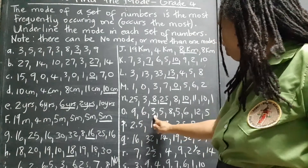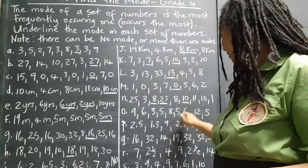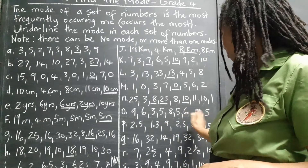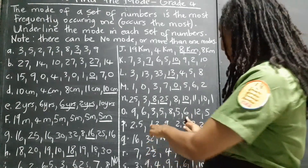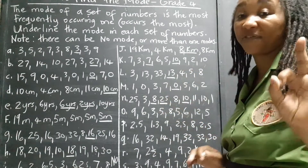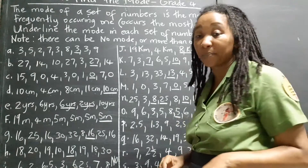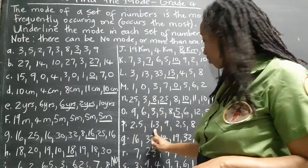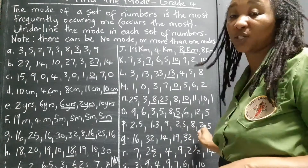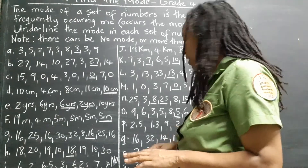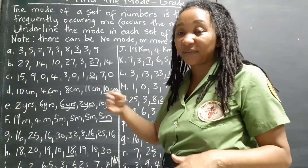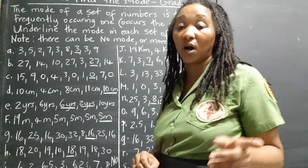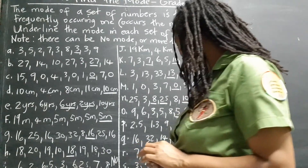Set O: 9, 6, 3, 5, 8, 5, 6, 12, 5. Five looks like the clear winner — there are three fives, and there are only two sixes. So yes, five is the mode, the champion. Set P: 2.5, 1.3, 9, 2.5, 8, 2.5. Clearly it's 2.5 — you could hear it being repeated. There are three of them and only one of each other number, so 2.5 is the mode.